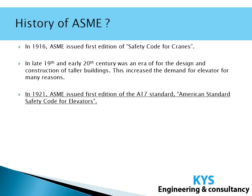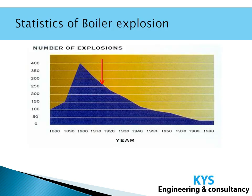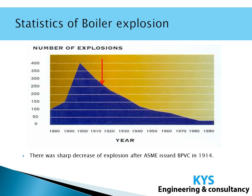We can see how ASME was concerned over the safety of people. In 1916, ASME issued the first edition of the ASME pressure vessel code Section 3 for nuclear vessels. Over the years, ASME has developed around 563 codes and standards. Looking at statistics of boiler explosions, after 1914 there is a sharp decrease — showing how these codes on pressure vessels were helpful in protecting precious lives.